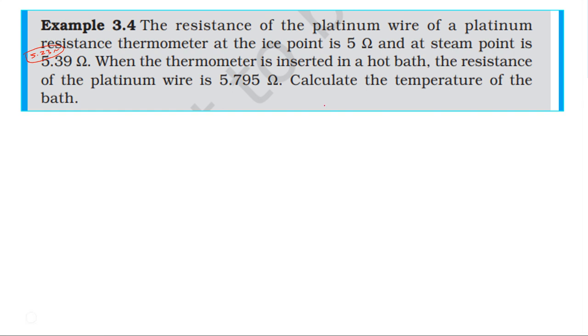At zero degrees centigrade, resistance is 5 ohm. At hundred degrees centigrade, resistance is 5.39 ohm. At t degrees centigrade, resistance is 5.795 ohm. The formula is: R_t = R_0(1 + α(t_2 - t_1)). In the formula, R_0 is at 0 degrees centigrade, R_t is at t degrees centigrade.